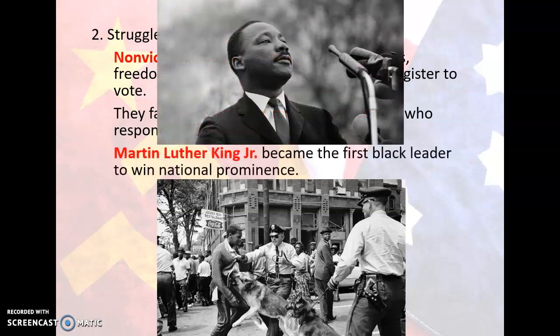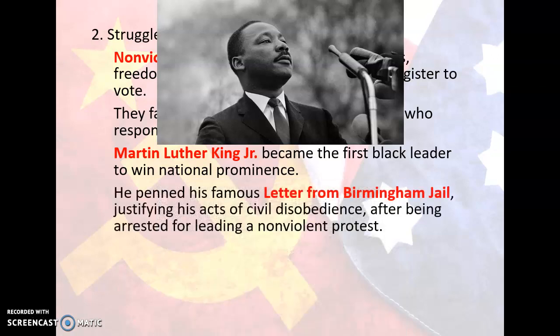Martin Luther King Jr. became the first black leader to win national prominence. He became well-known after he helped organize the bus boycott in Montgomery with Rosa Parks. He also founded the Southern Christian Leadership Conference to help the poor and underprivileged through social action. During this time, he penned his famous Letter from Birmingham Jail, justifying his actions of civil disobedience after being arrested for leading a non-violent protest. The protesters were met by police who used tear gas, cattle prods, attack dogs, and high-powered water hoses.